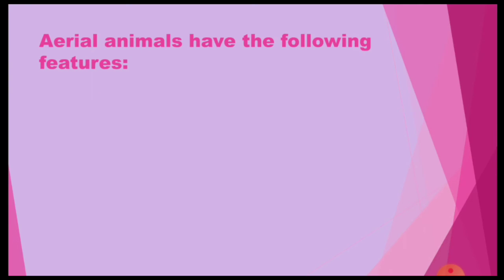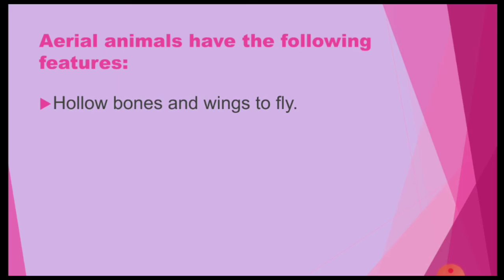Aerial animals have the following features. Aerial animals have hollow bones and wings to fly. They have a boat-shaped body which helps them to fly.